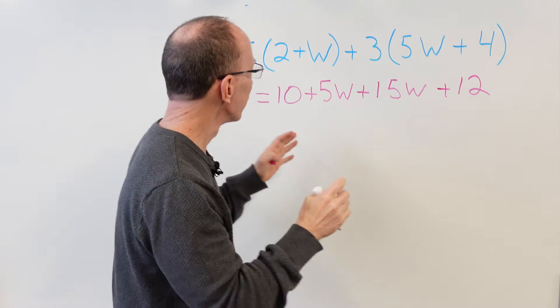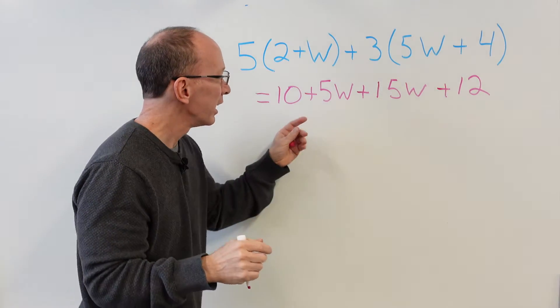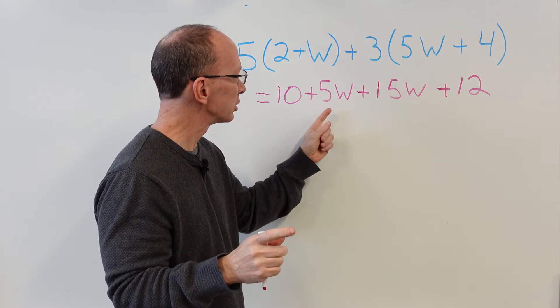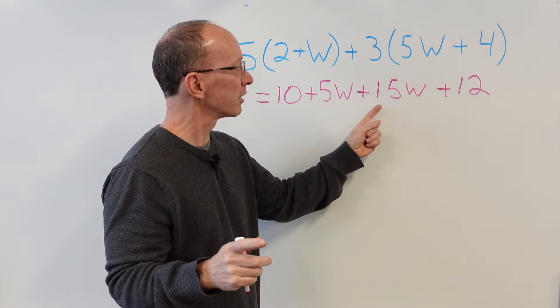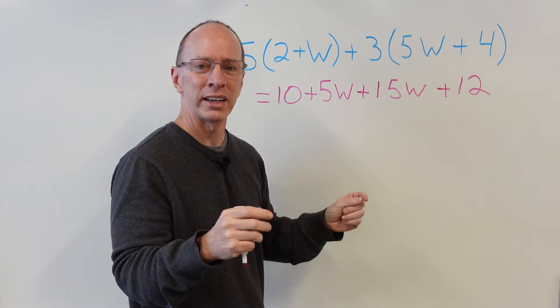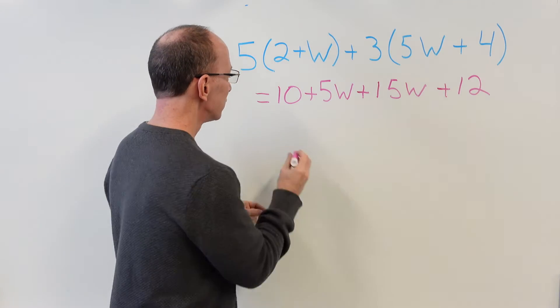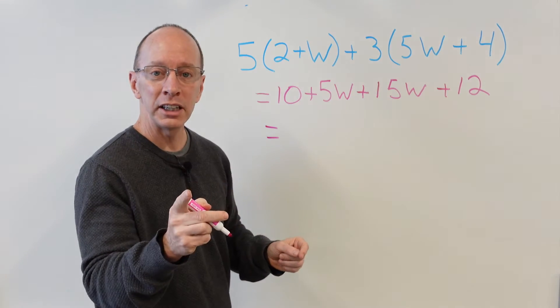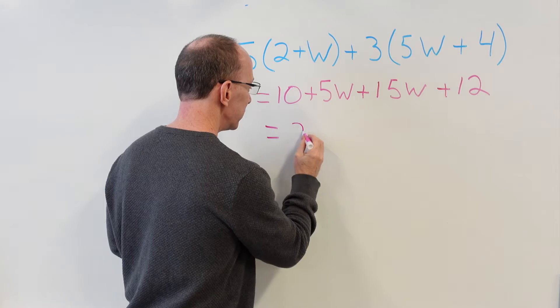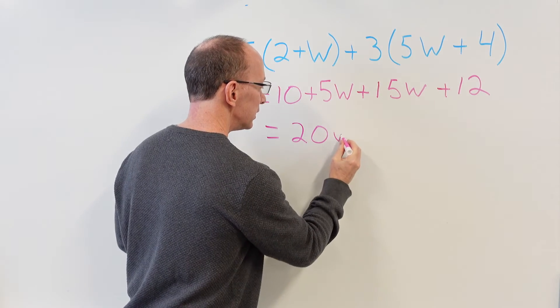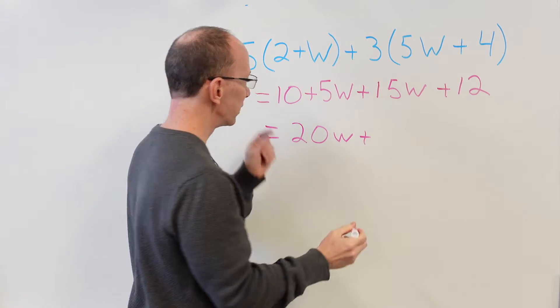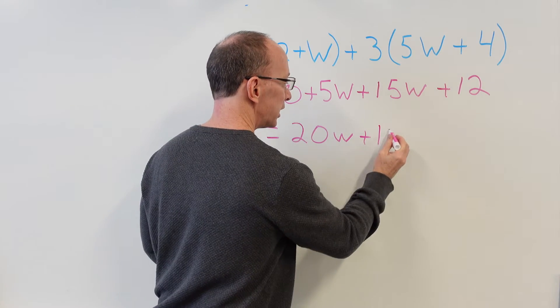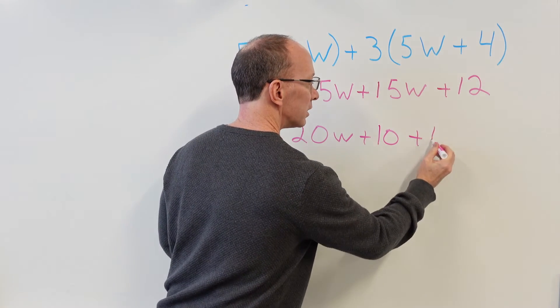Now we're going to look for like terms to combine, things that might have in common. So we got the 5w and we got the 15w. I think we can add those two together. So 15 plus 5 is 20. 20w plus 10 plus 12.